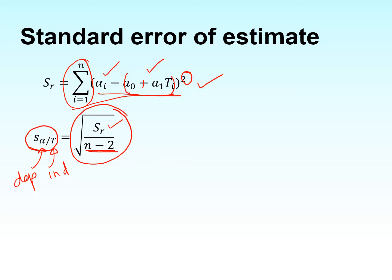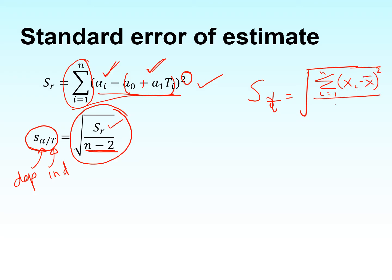The standard error estimate has two variables next to it — alpha slash t — where the dependent variable goes first and the independent variable goes second. It is a measure of the variation between the observations and what you have predicted. It is a very similar concept to standard deviation: summation of (x_i minus x-bar) squared divided by n minus 1, where x_i are your data values and x-bar is the average. Here, similarly, you take the difference between observed and predicted values, square them, and add them all up.